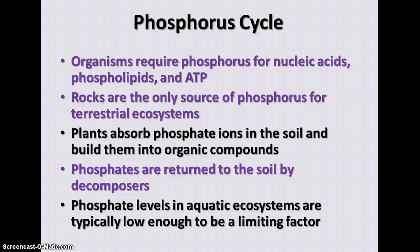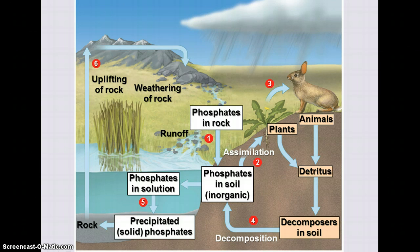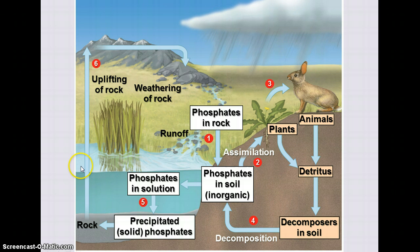In aquatic ecosystems in particular, phosphate levels can definitely be a limiting factor in population growth. In the phosphorus cycle, phosphorus starts in rock, and through uplifting it's exposed and washed off into the water or accumulated in soil. Plants can assimilate it, incorporating it into nucleic acids and phospholipids that are then passed on to animals. Both plants and animals return phosphorus to the soil via waste and detritus, and decomposition returns phosphates to the soil or back into solution in water.